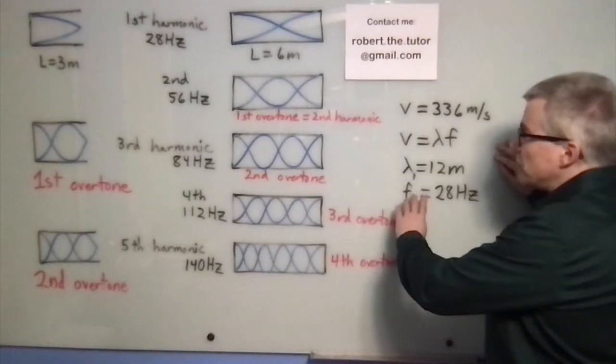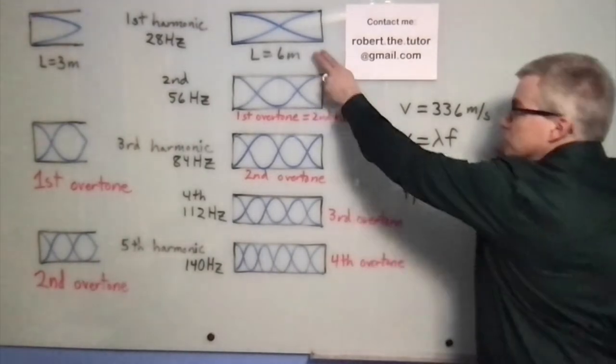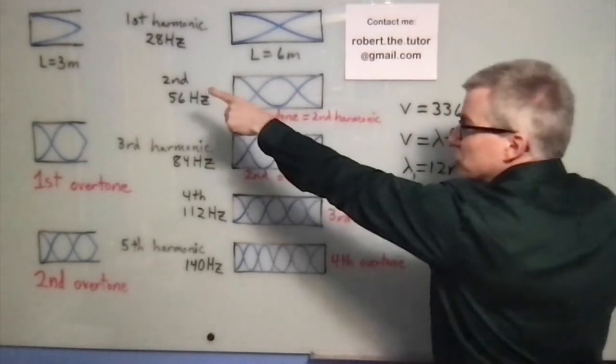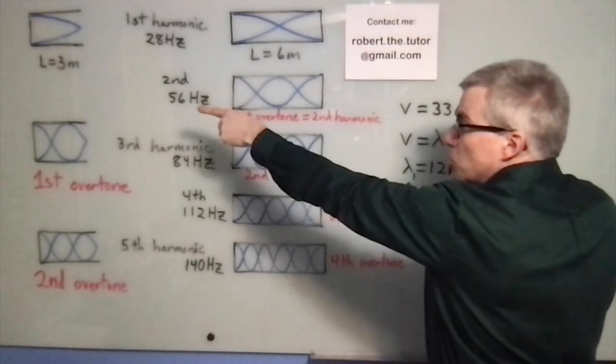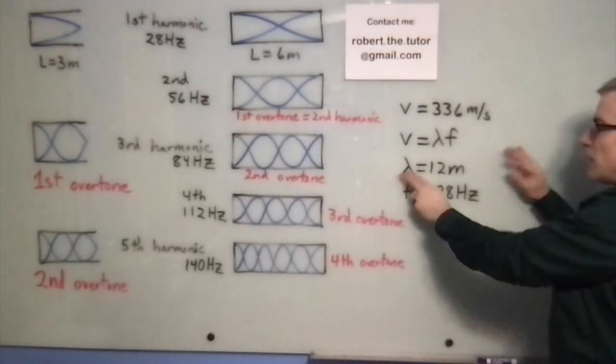The wavelength of the fundamental is 12 meters for this, because that has half a wave, and it's 12 meters for that, because that 3 meters is a quarter of a wave. So the wavelength is 12 meters.